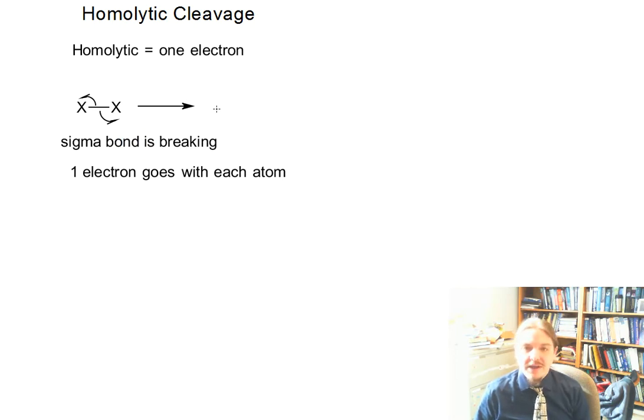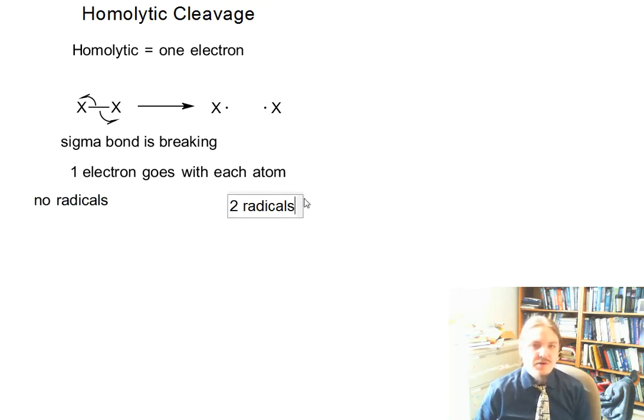And what we get are two radicals. So if we count up from the reactants to the products in this mechanism step, we have no radicals on the left hand side of the reaction, and we form two radicals on the right hand side.